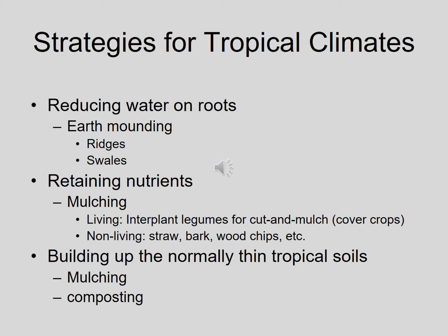Thicker, more fertile soils tend to be found in temperate climates, where plants grow well in spring and summer, then go dormant in winter. All the organic matter — leaves, annuals, grasses — dies back, lies on the ground, and isn't reabsorbed by dormant plants, building rich soil over time. In the tropics, everything grows year-round, so rich soil doesn't accumulate. These are the main strategies permaculture designers use in tropical climates.